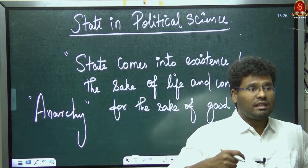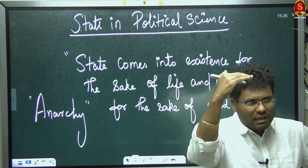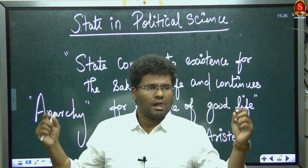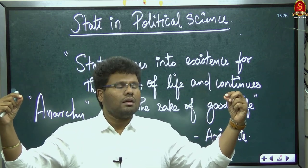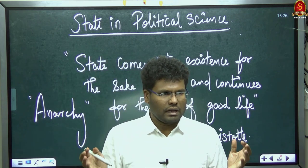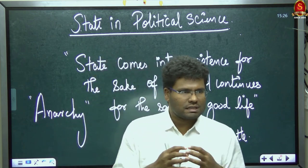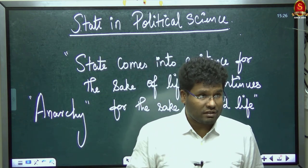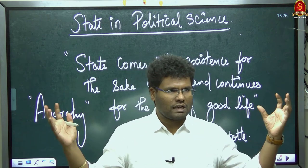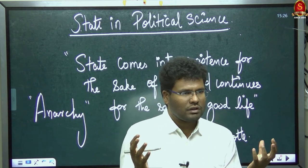There is a famous saying: 'There is nothing above the state.' Everything is below the state. The state decides what needs to be done and what need not be done. The state organizes everything, controls everything, and does everything. So the state is the ultimate end for political science — political science entirely talks about the state because the state controls everything in the lives of human beings.